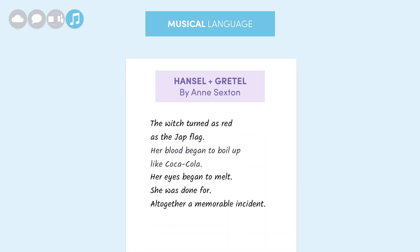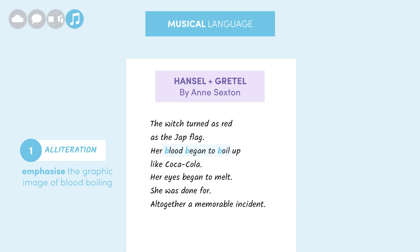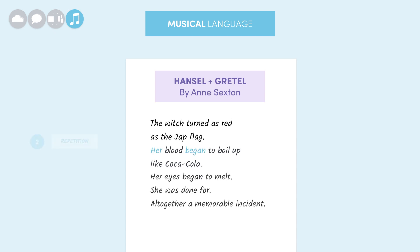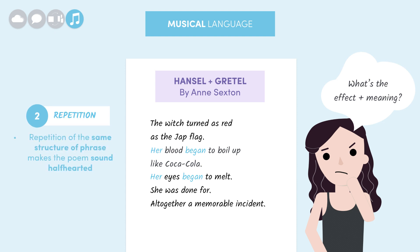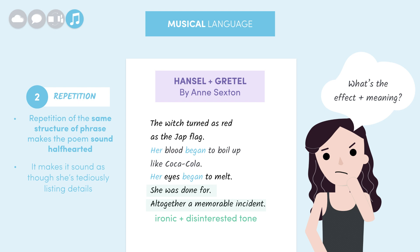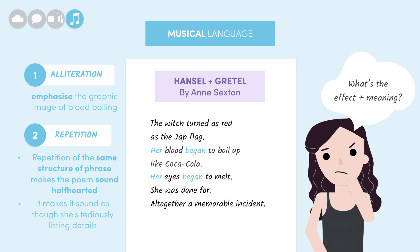Let's see how musical language shapes meaning in our extract. First up, we've got the alliteration in the words 'blood began to boil.' Those repeated B sounds really emphasize that graphic image of boiling blood. Second, we also have some interesting repetition — the words 'her' and 'began' are repeated in two consecutive descriptions of the witch's death. By repeating the same structure of phrase, Sexton makes the poem sound deliberately half-hearted, as if she's being lazy in her word choice, which suits the ironic and disinterested tone we discussed earlier. It also makes it sound like she's rather tediously listing details.